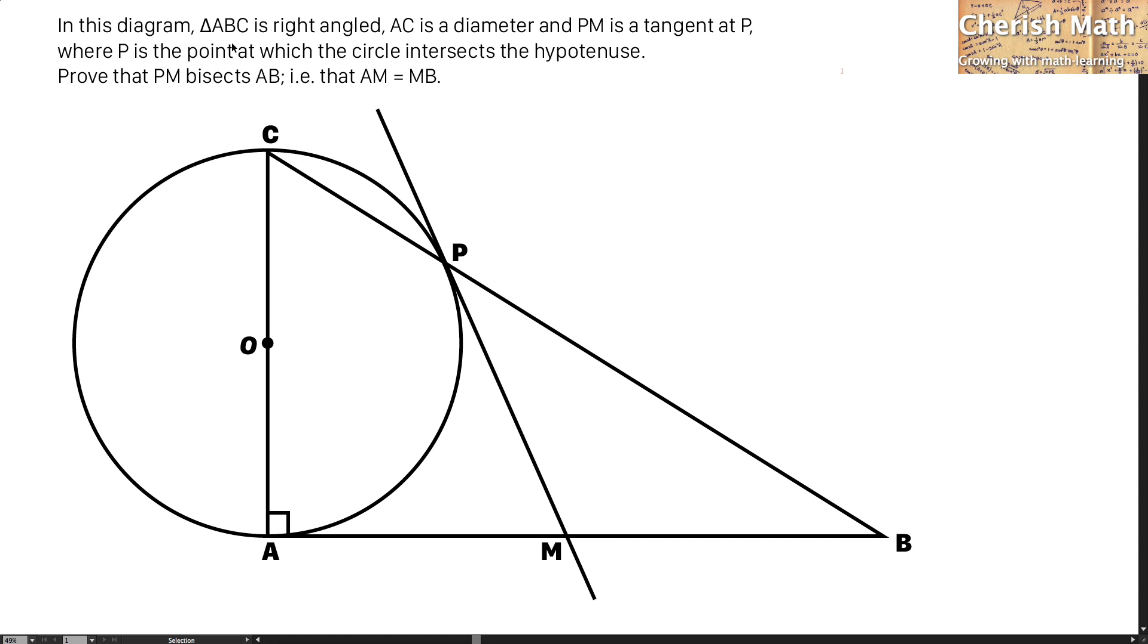In this diagram, triangle ABC is right angle, AC is a diameter and PM is a tangent at P, where P is the point at which the circle intersects the hypotenuse.